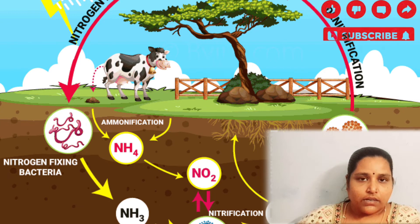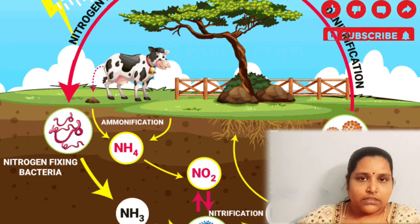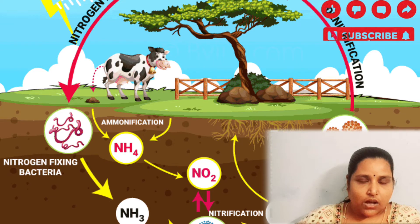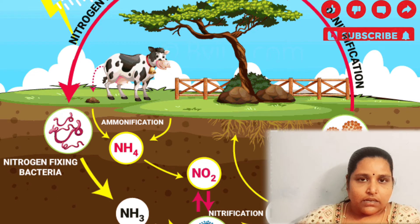Plants take carbon dioxide and release oxygen. In this way, in spite of the utilization of oxygen, plants release oxygen and animals consume it. Animals release carbon dioxide through respiration, and plants utilize carbon dioxide. So plants utilize carbon dioxide and release oxygen.